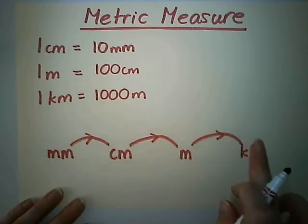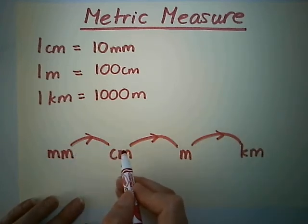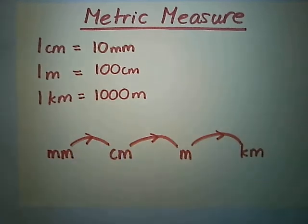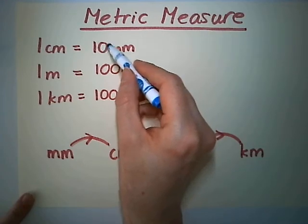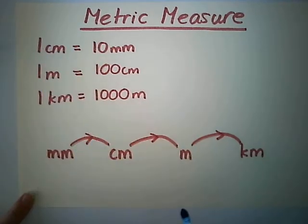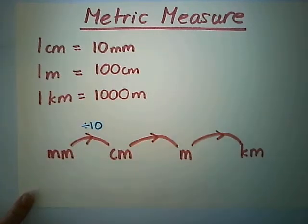If I know millimeters and I'm trying to get to centimeters, 10 millimeters equals one centimeter, so I'm going to have to divide by 10. If we had 20 millimeters to start with, that would equal 2 centimeters.